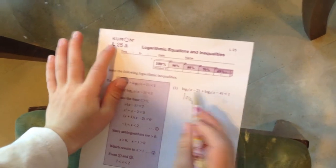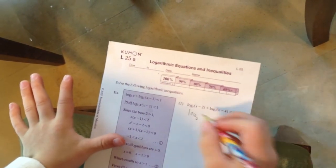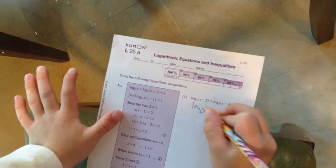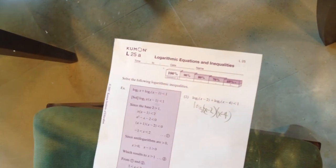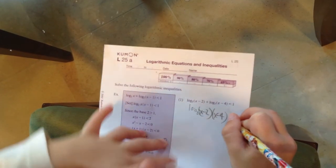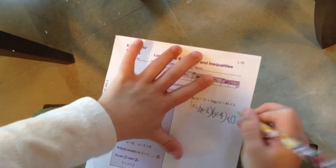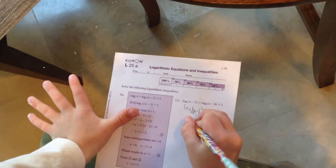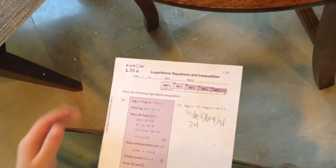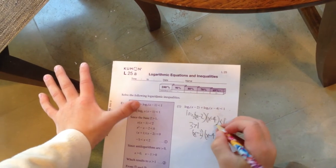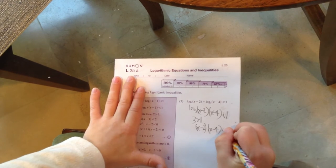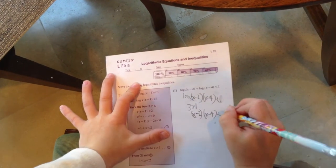Log base 3 of (x minus 2) times (x minus 4). Now, since the base 3 is greater than 1, (x minus 2) times (x minus 4) is less than 3 to the power of 1, which is 3.